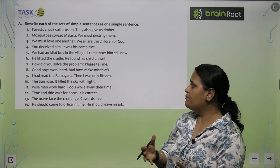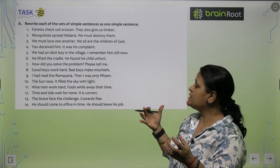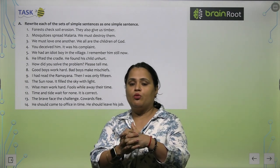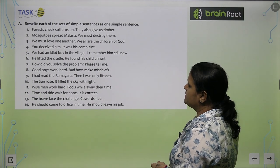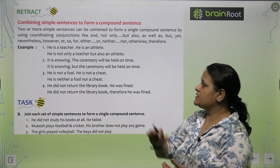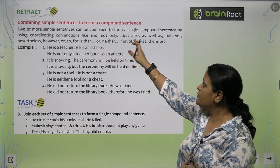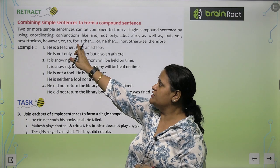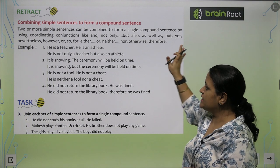'Good boys work hard. Bad boys make mischief.' This way you can make sentences. Combining simple sentences to form a compound sentence — two or more simple sentences can be combined to form a single compound sentence by using coordinating conjunctions like 'and,' 'not only but also,' 'as well as,' 'but,' 'yet,' and similar.